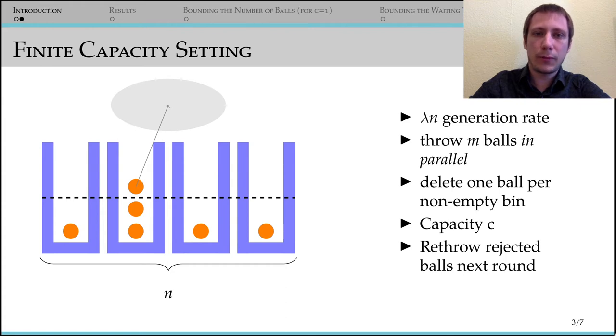We assume that bins break ties by preferring older balls. This has no impact on neither the total number of balls in the system nor the average waiting time.